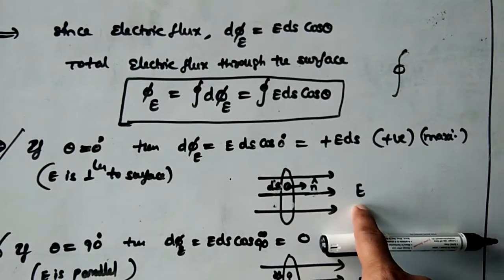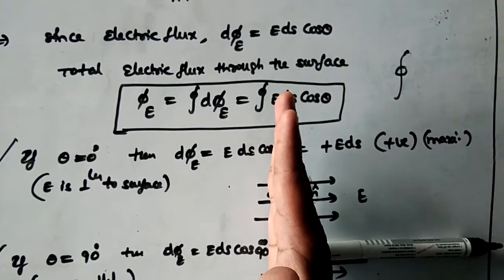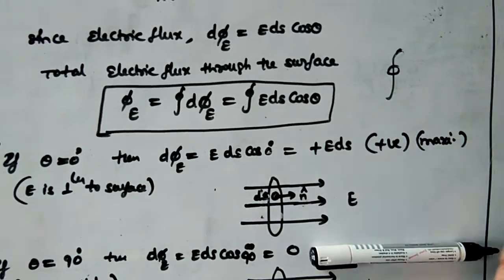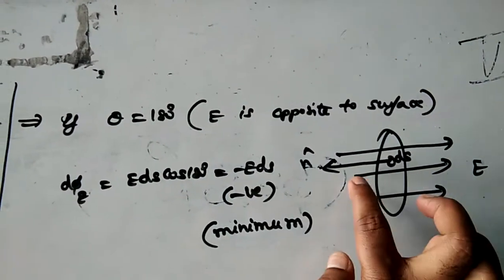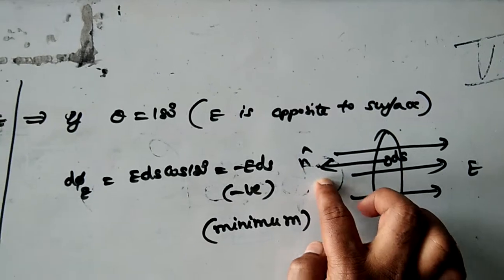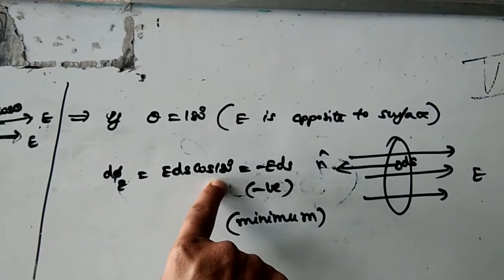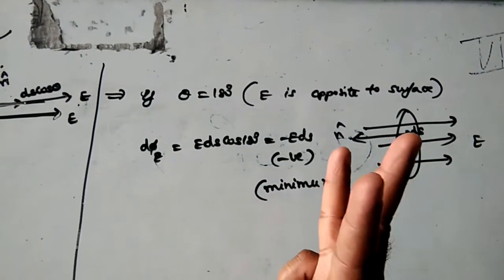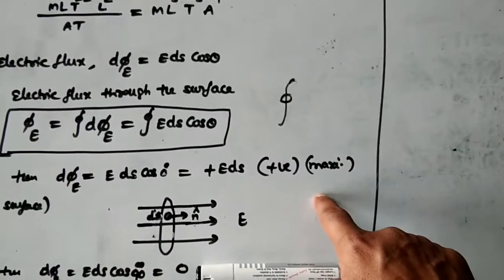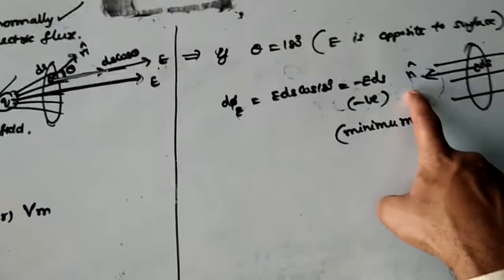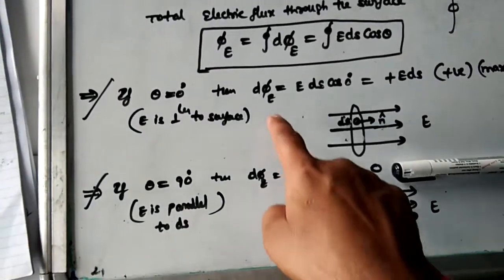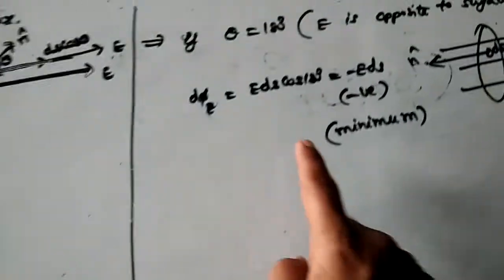To repeat: when the surface is perpendicular to the field and n cap is parallel to E, flux is maximum. Case 3: theta = 180°. Electric field is in one direction, but surface area ds and n cap are opposite to E. Substituting theta = 180°, cos 180° = −1, so flux = −E ds, which is negative — the minimum value. So flux may be positive, zero, or negative, and these three cases will be used in applications.